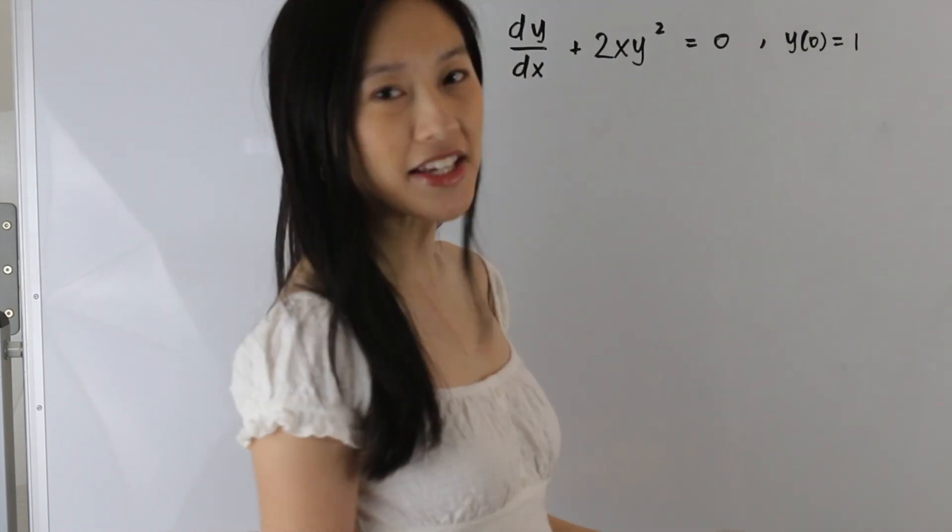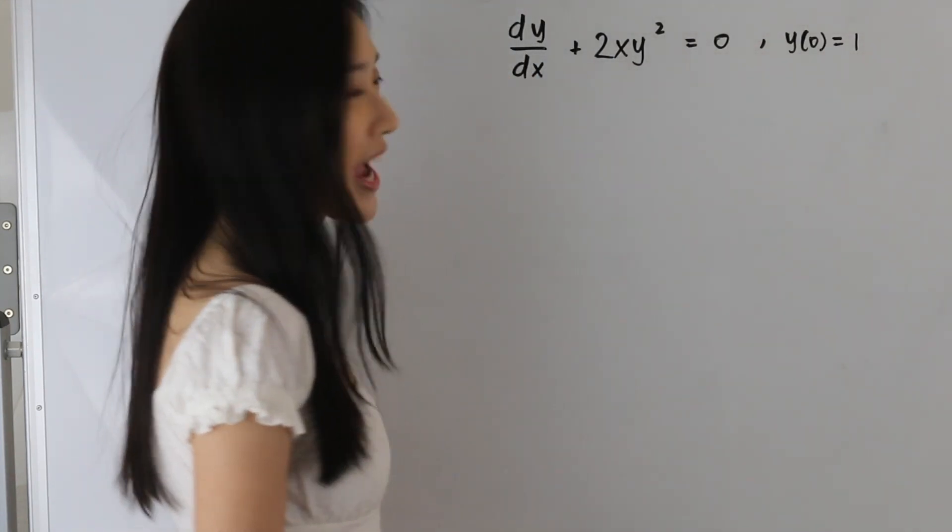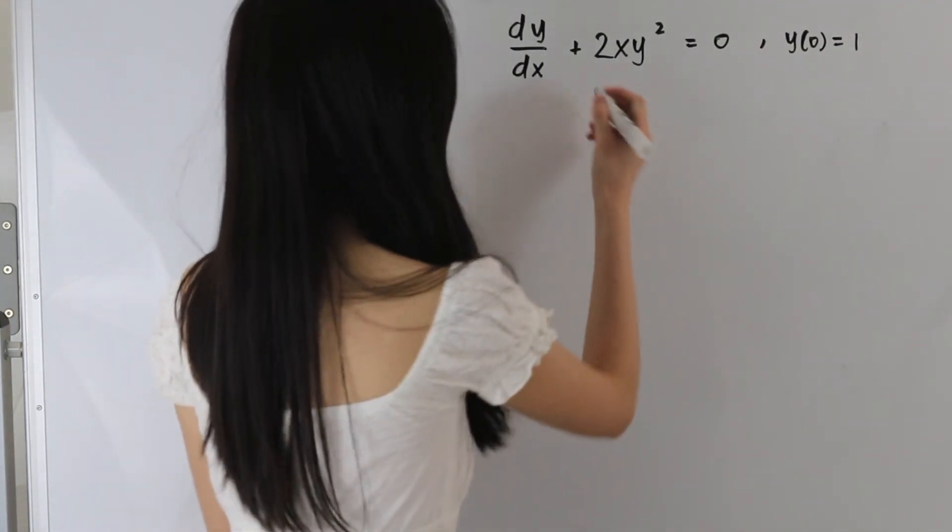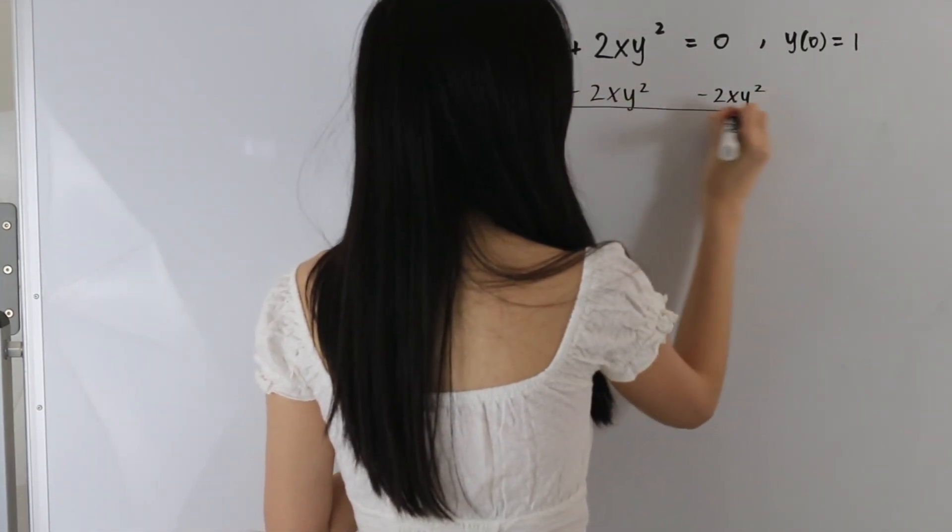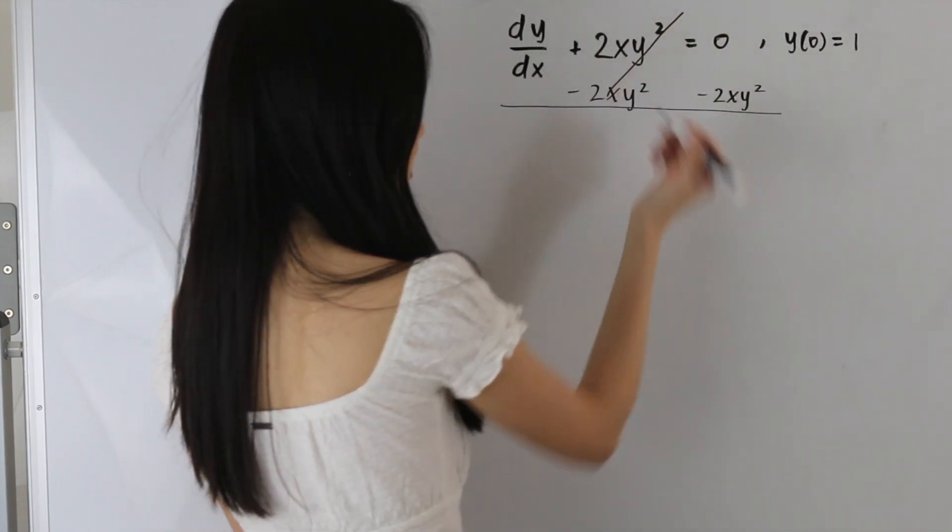Let's go ahead and start out by subtracting both sides by 2xy squared. So from here, these two terms cancel out.